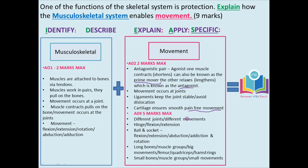AO3 is where you justify what you've said using connective words. Different joints have different movements: a hinge joint provides flexion and extension, however the ball and socket allows flexion, extension, abduction, adduction, and rotation. Long bones provide big movements — for example, the femur with the large quadriceps at the front and hamstrings at the back. Small bones and small muscle groups produce small movements. Building all this up should allow you to achieve all nine marks.